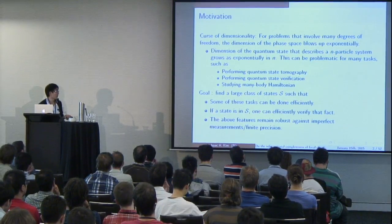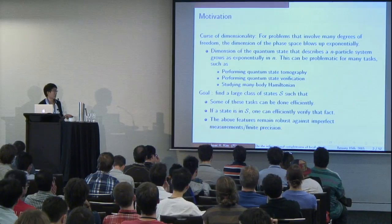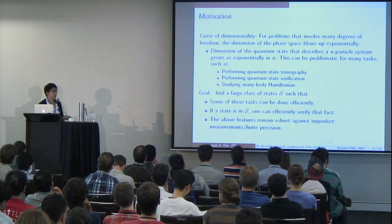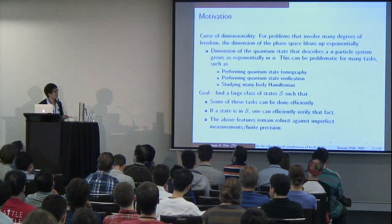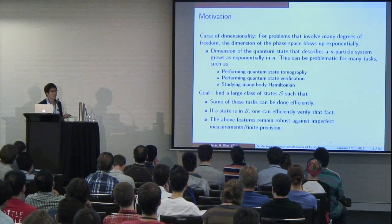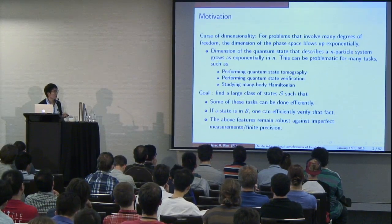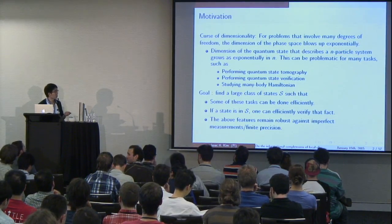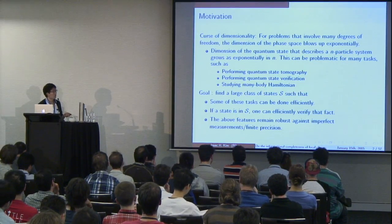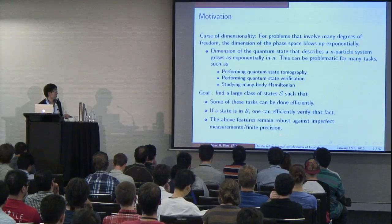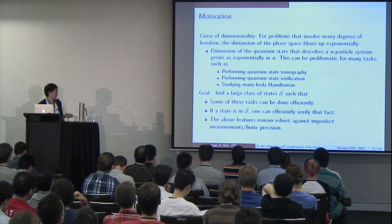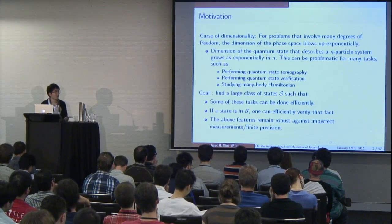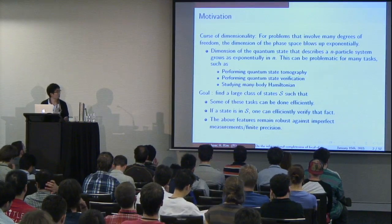In my opinion, there have to be two additional assumptions. The first is that if a state is actually in S, then you should be able to efficiently verify that fact. Because if you make nice algorithms tailor-made for S and want to go into the lab, you first need to convince yourself that whatever you have is actually in S. And secondly, these features should remain robust against imperfect measurements or finite precisions, because if it only works for a very special point in Hilbert space, it's not going to be very useful.